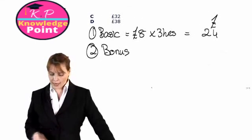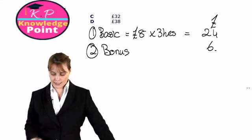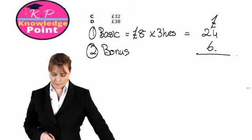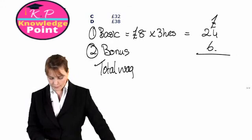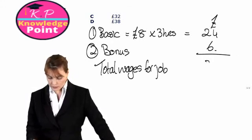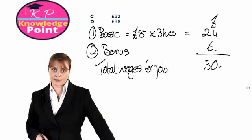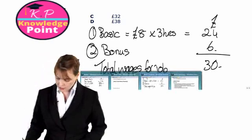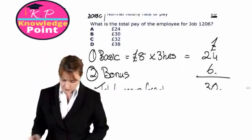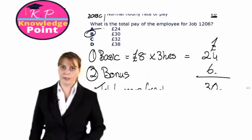We move this into our exercise and add it in. So we have our basic and our bonus, so the total wages for the job are £30. It's a multiple choice question. Let's just have a look to see where it is. Option B, £30.